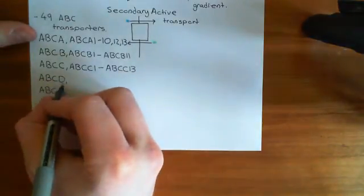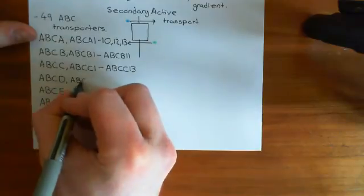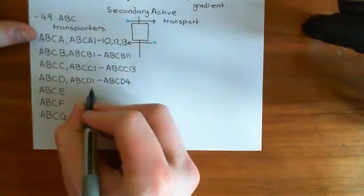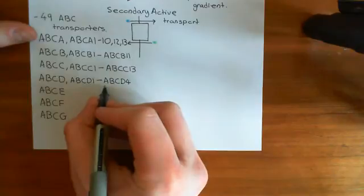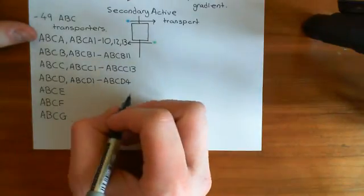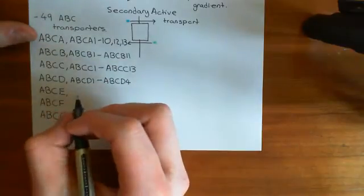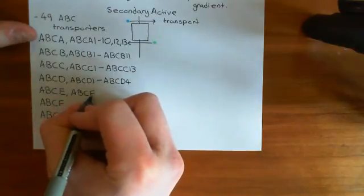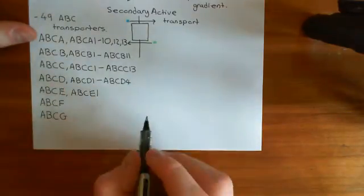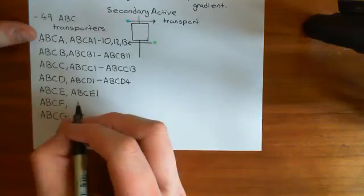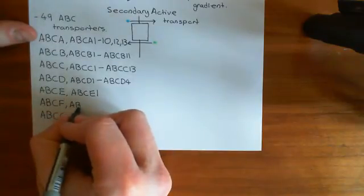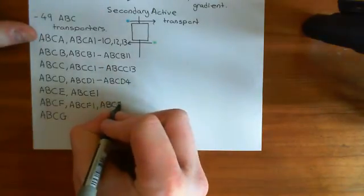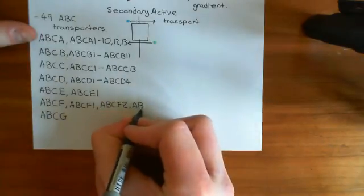The ABCD family runs from ABCD1 to ABCD4: ABCD1, ABCD2, ABCD3, ABCD4. For the ABCE family, there is only one member — ABCE1. For the ABCF family, there is ABCF1 through ABCF3: ABCF1, ABCF2, ABCF3.